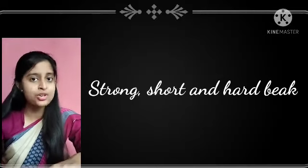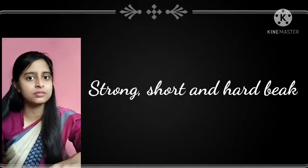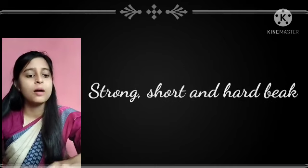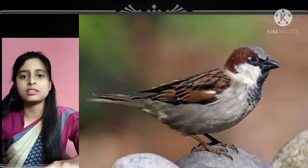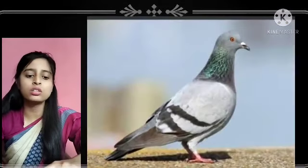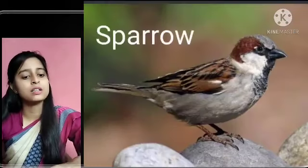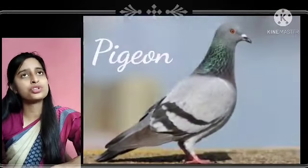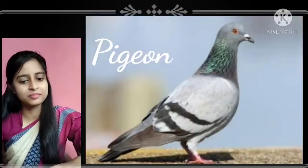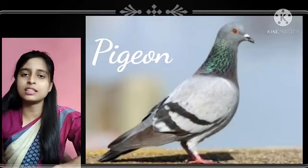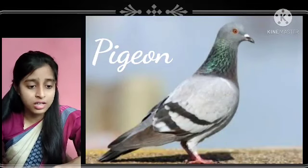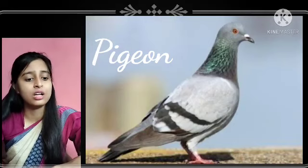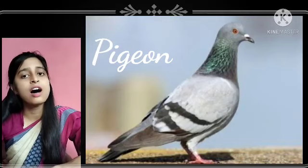Some birds have a strong, short, and hard beak. For example, sparrows and pigeons have strong, short, and hard beaks to crush and eat nuts and seeds. These birds eat nuts and seeds which are very hard, and that is why they have hard beaks.